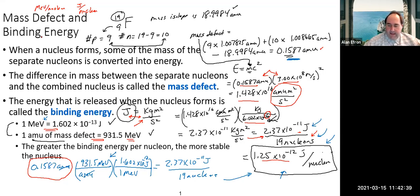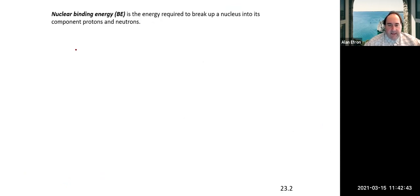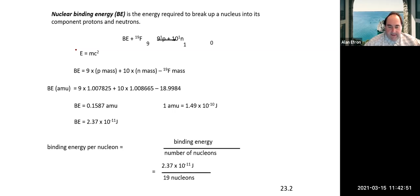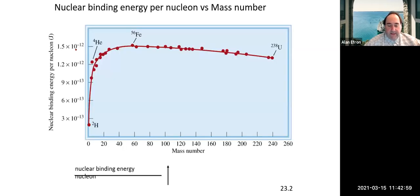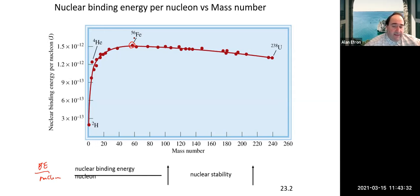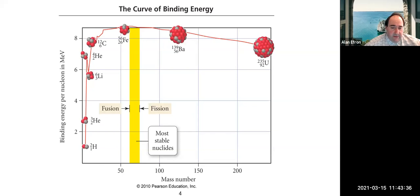Let's look at the graph of nuclear binding energy per nucleon. As the binding energy per nucleon increases, nuclear stability also increases. It maxes out right around iron-56, which is at the highest point in terms of stability. So this is a good measure of stability when comparing different isotopes — most stable isotopes fall in this range, with iron-56 at the top.